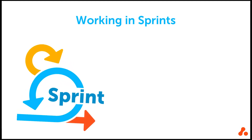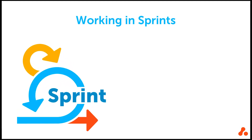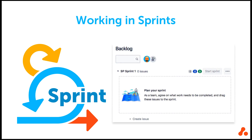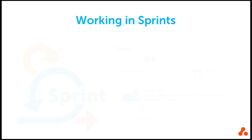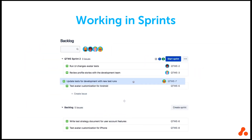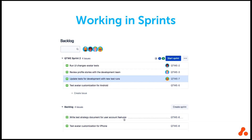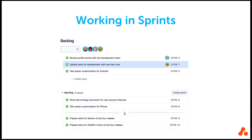A sprint is a container for all of the work a team decides to do for a specific time period. Once you have plenty of issues in your backlog, you can build a sprint. A Jira Scrum board automatically includes your first sprint ready for you to update with issues. To build your sprint, all you need to do is drag issues from the backlog or create issues directly in your sprint using the Create Issue link.